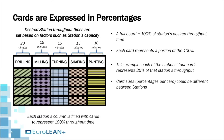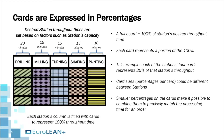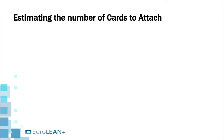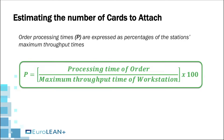Cards could be set to represent any percentage desired, and stations could have different percentages per card, but a trade-off is always required in this decision. Smaller percentages on the cards make it possible to combine them to precisely match the processing time for any order being considered for release, but it means there are more cards to manage. The number of cards to attach to an order for its processing at a station is determined by converting the order's processing time to a percentage of the workstation's maximum throughput time using this equation.